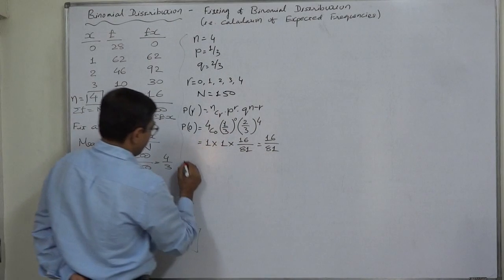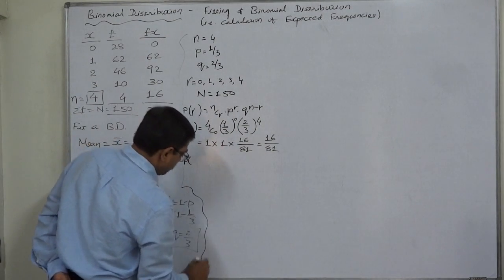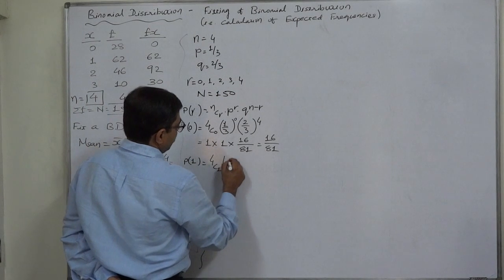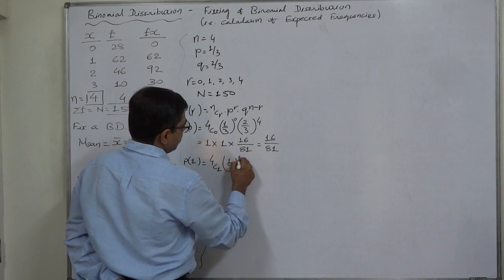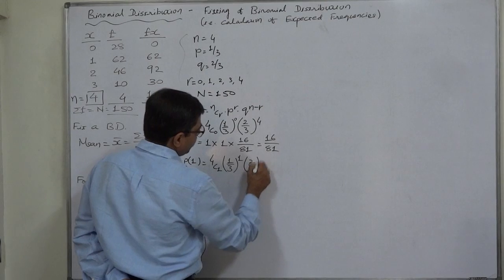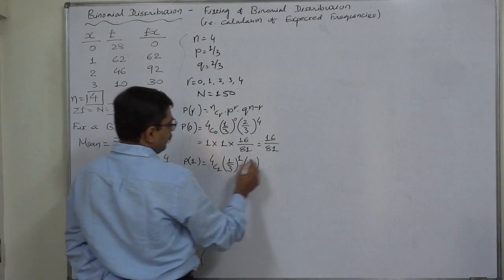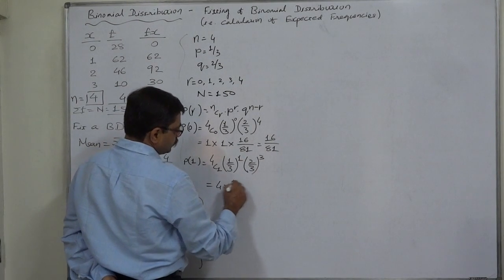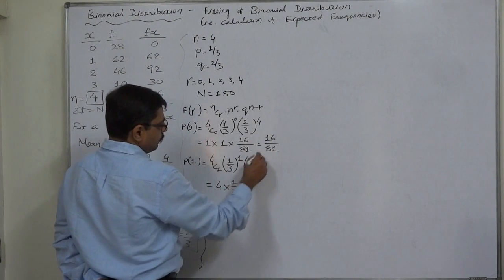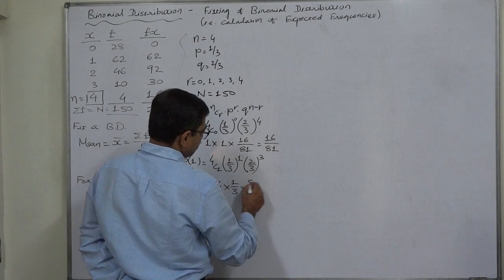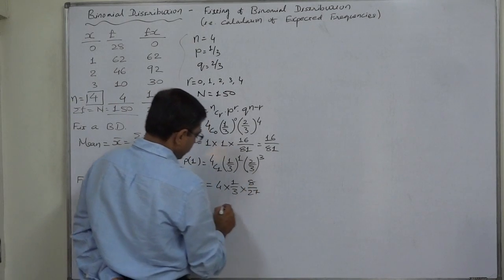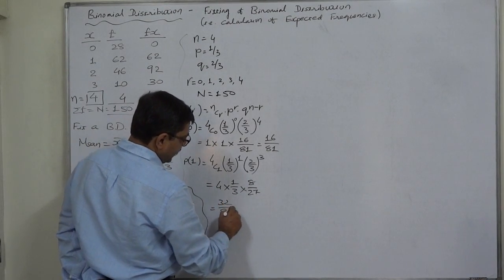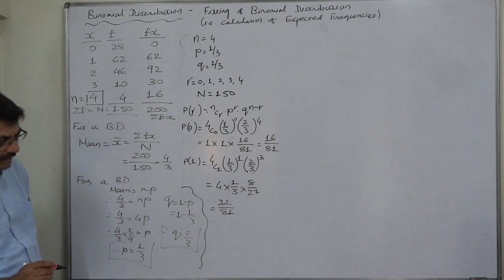P of 1. 4C1 into 1 by 3 (that is p raised to 1) into 2 by 3 (that is q raised to 4 minus 1, 3). 4C1 is 4 into 1 by 3 raised to 1 is 1 by 3, into 2 by 3 raised to 3 is 8 by 27. 4 into 1 into 8 is 32, 32 by 81.